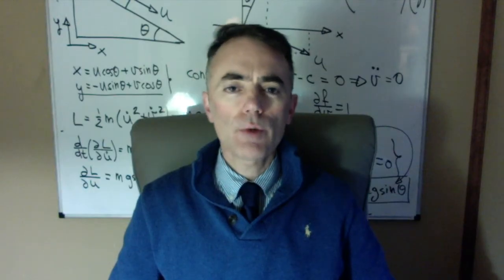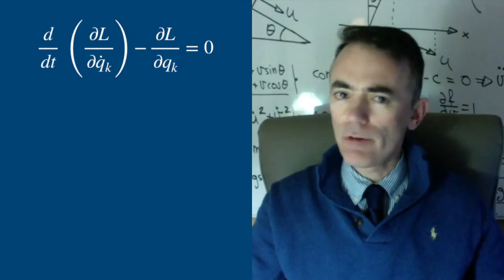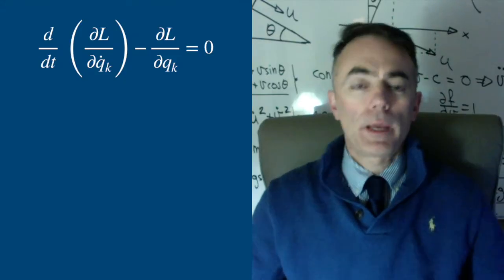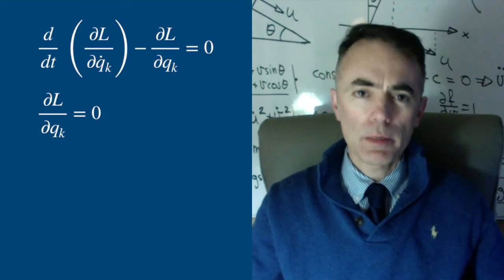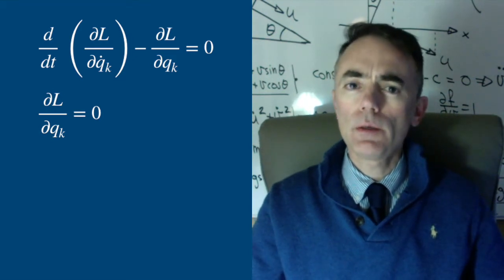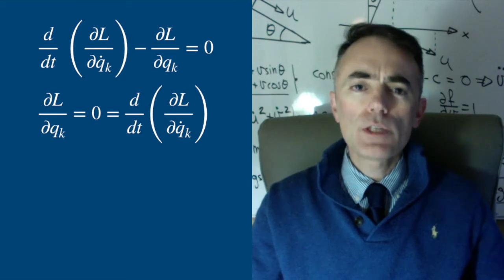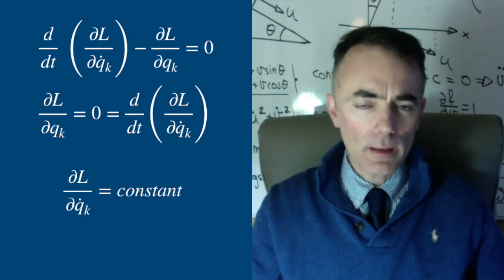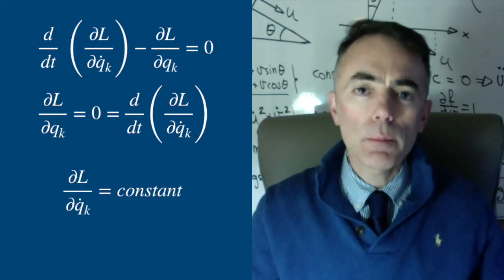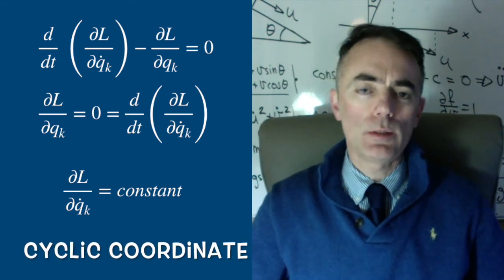Imagine that you have a Lagrangian that does not depend on a specific variable — for example, q sub k. In that case, Lagrangian's equations with respect to this variable can be rewritten as equal to zero. So the partial derivative of the Lagrangian with respect to q dot sub k is constant and does not depend on time. We call q sub k a cyclic coordinate.